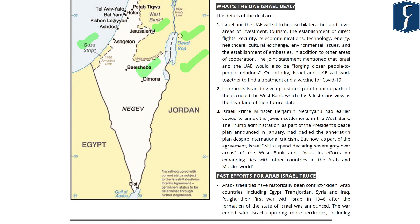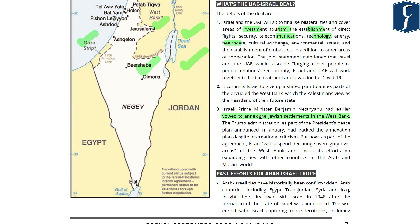This deal between Israel and the United Arab Emirates aims at establishing full diplomatic relations, cooperating in areas like investments, tourism, direct flights, telecommunications, technology, energy, and healthcare. Earlier, the Israeli Prime Minister had voted to annex the Jewish settlements in the West Bank region, which is claimed by the Palestinians. This move was supported by the Trump administration. However, as part of this Abraham Accords agreement, Israel has suspended its plan of annexing or declaring sovereignty over areas of the West Bank.